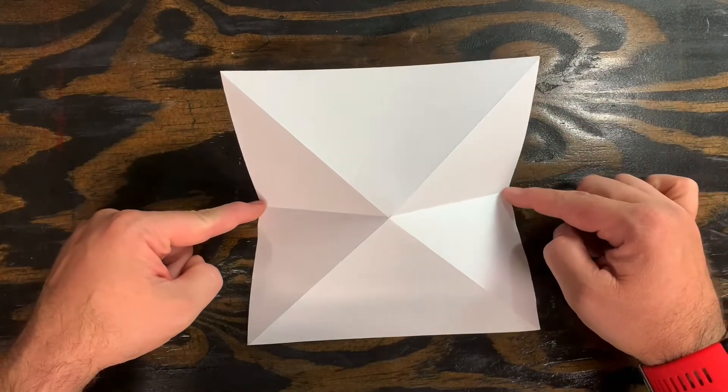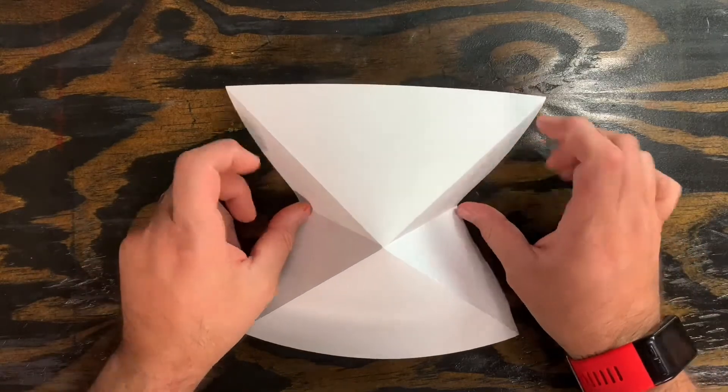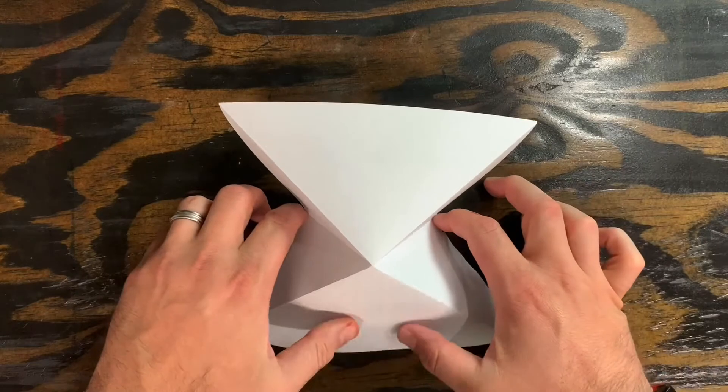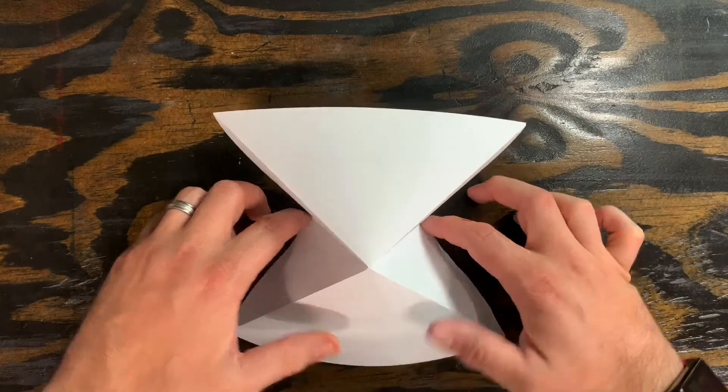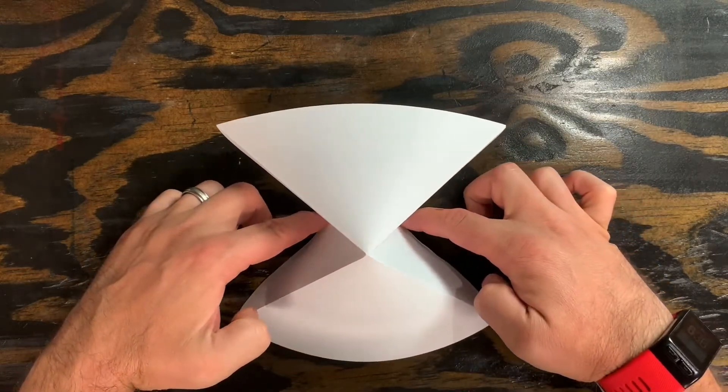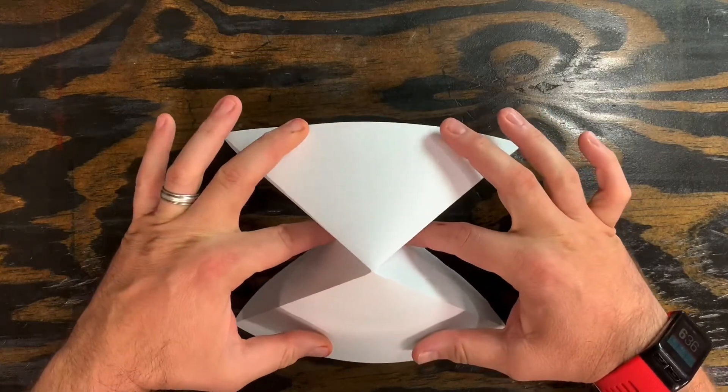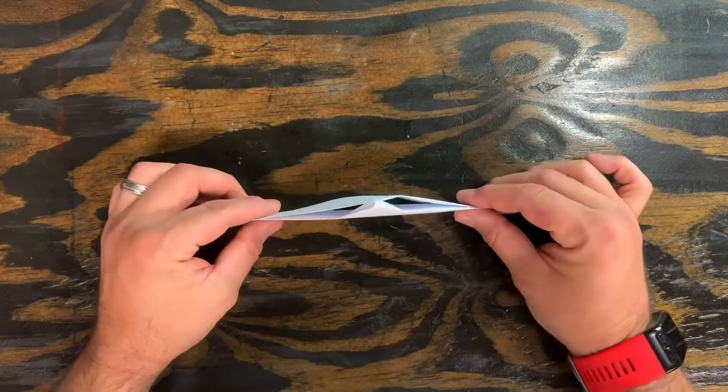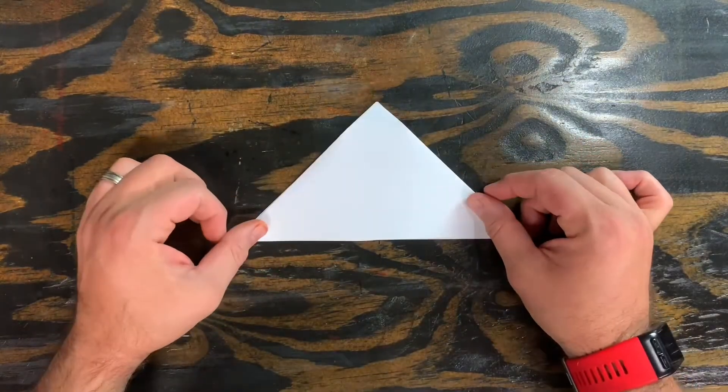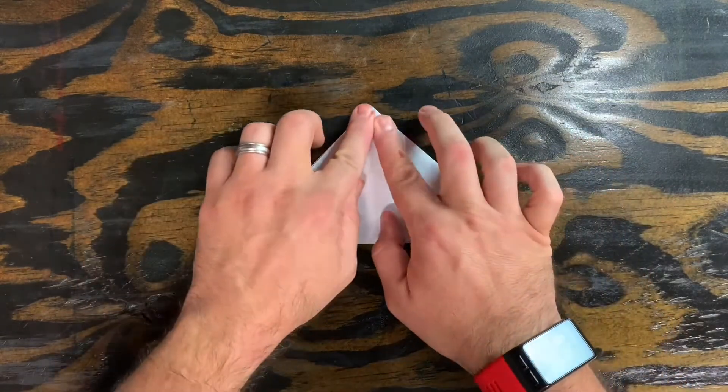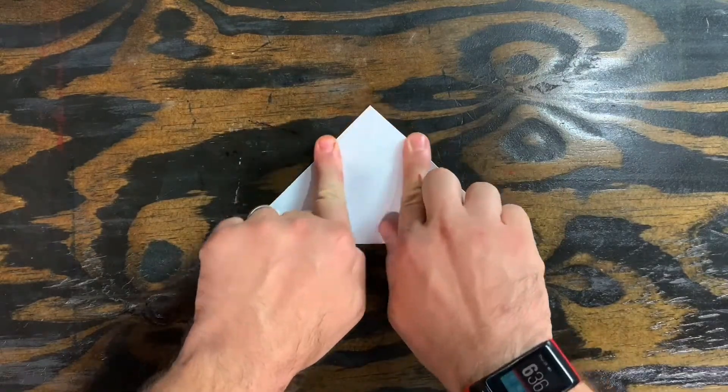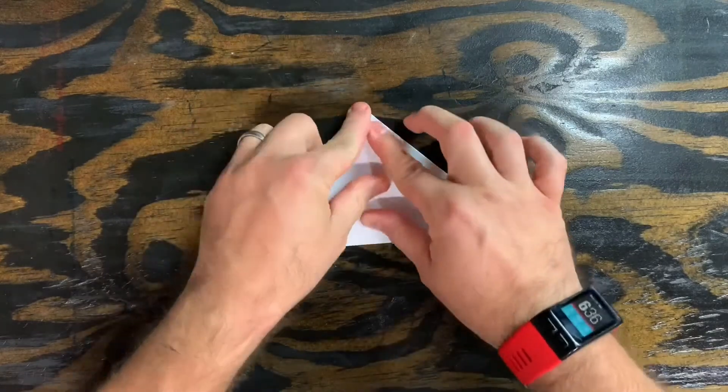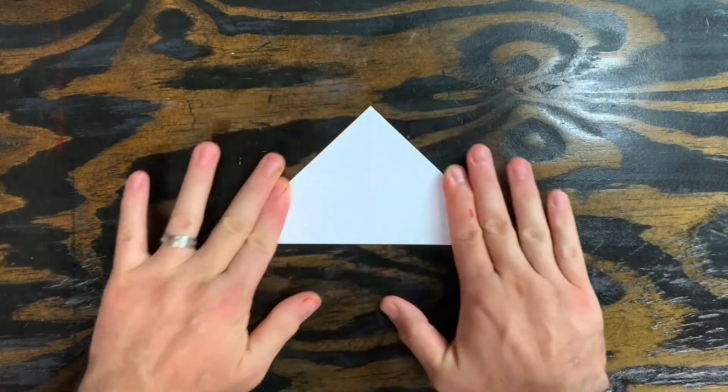We're going to push the sides in and you can see that there's a triangle right here and a triangle right here. So keep pushing those sides in and when you can reach them take both triangles and just pinch them together. Once you have this one triangle go ahead and rub those folds down and try to get the triangle to lay flat on the table.